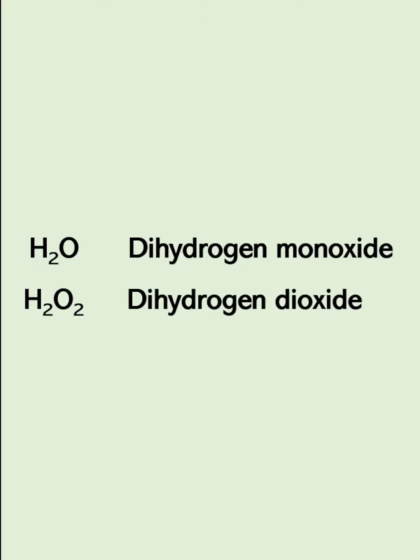So as you observe here, we use these terms: di, mono, di. These are the prefixes we use, and these prefixes tell us the number of that element in the compound.